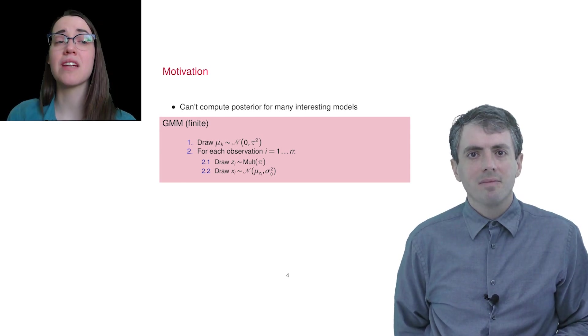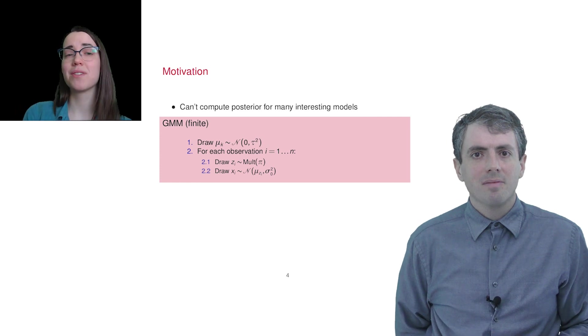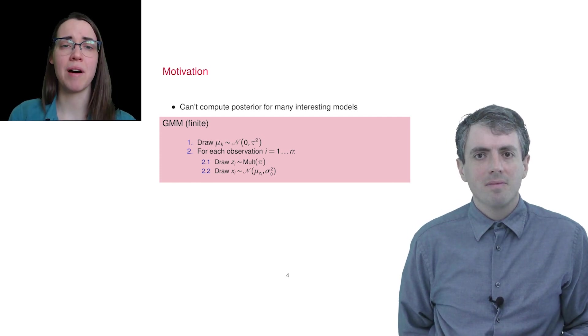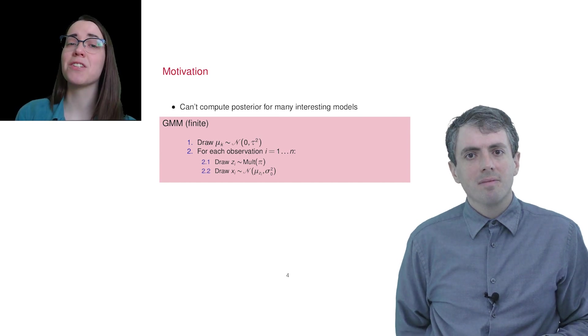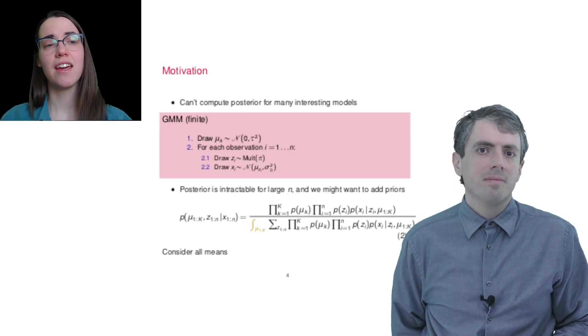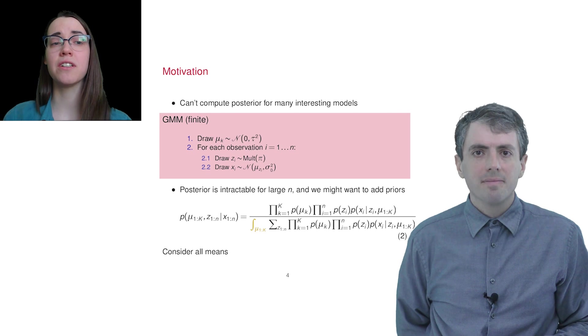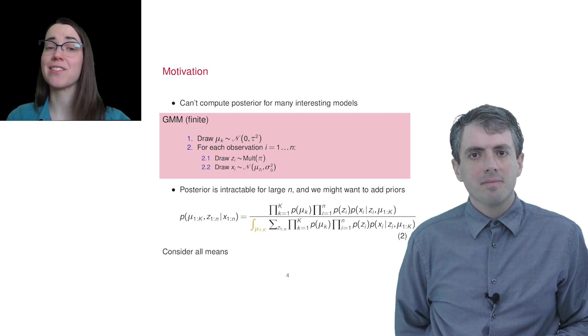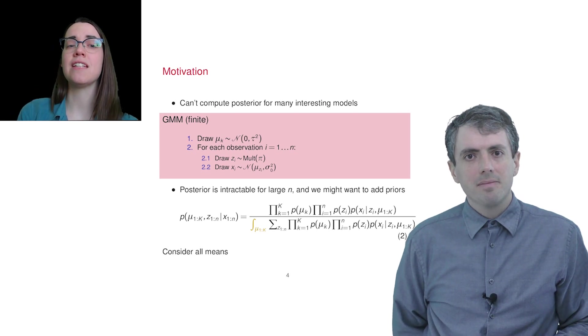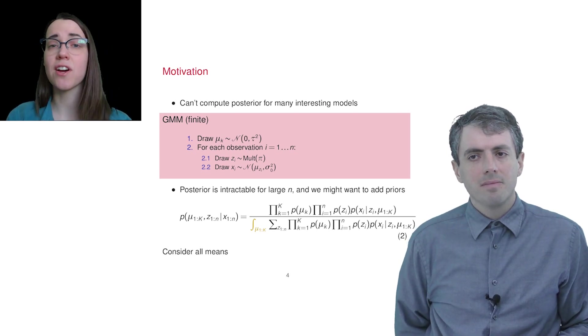Even for models simpler than topic models, you run into problems. Take a really simple model, called the Gaussian mixture model. This tries to partition a dataset into a fixed number of clusters. Each cluster has its own mean vector, mu sub k, in space, and each data point gets assigned to one of the clusters. The posterior distribution over mu and z describes how likely each of the clusters are.